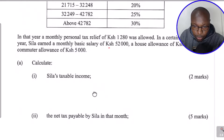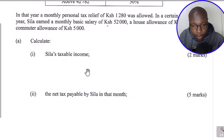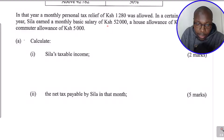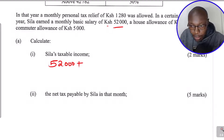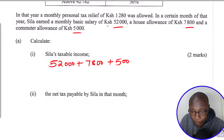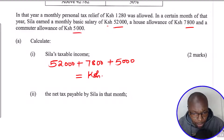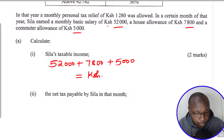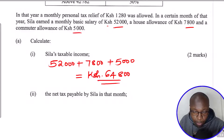For Part 1, we need to find Sila's taxable income. To get the taxable or gross income, we take the basic salary of 52,000 and add all the allowances. We have a house allowance of 7,800 and a commuter allowance of 5,000. So 52,000 plus 7,800 plus 5,000 gives a taxable income of 64,800 shillings.